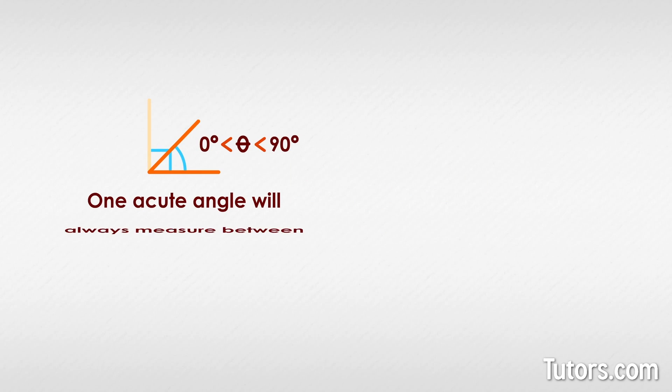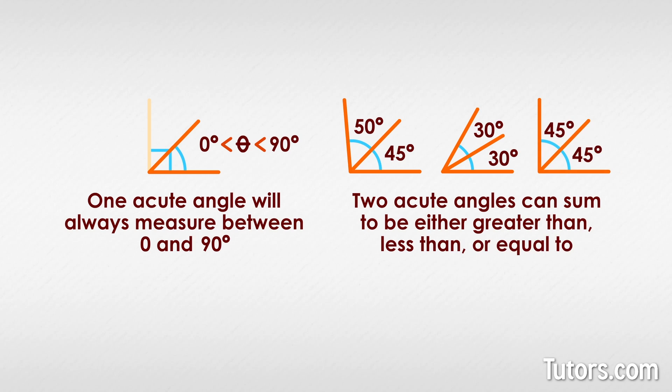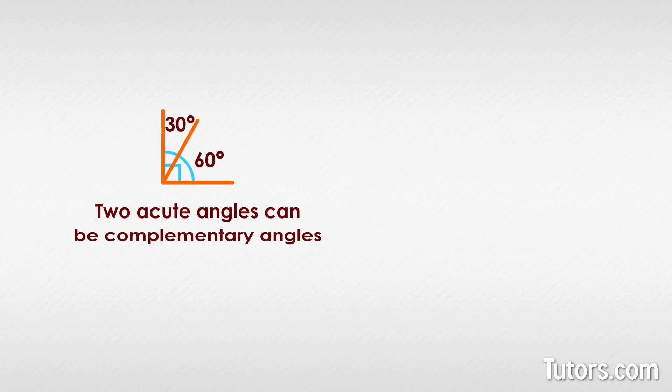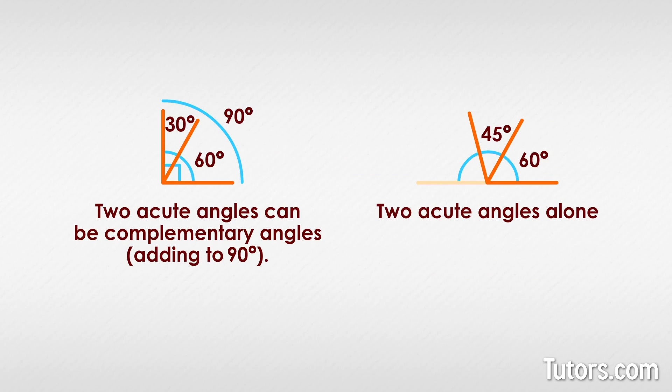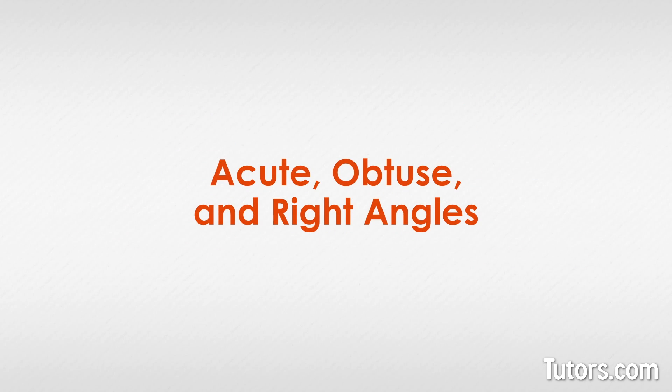One acute angle will always measure between 0 and 90 degrees. Two acute angles can sum to be either greater than, less than, or equal to a right angle. Two acute angles can be complementary angles, adding to 90 degrees. Two acute angles alone cannot sum to make a straight angle of 180 degrees. Now let's discuss acute, obtuse, and right angles.